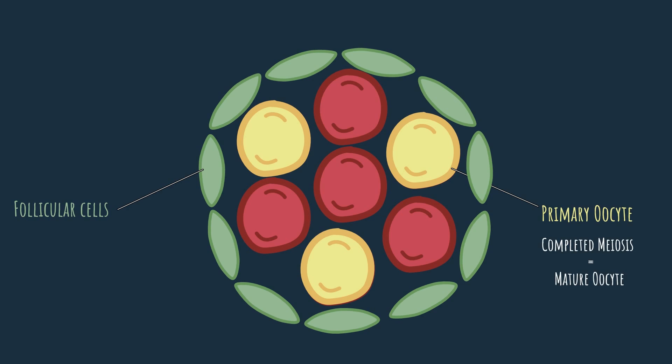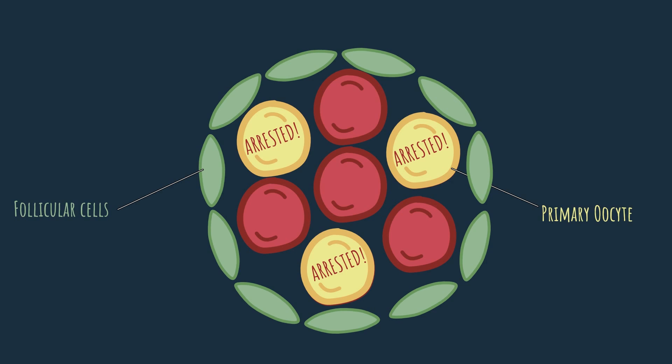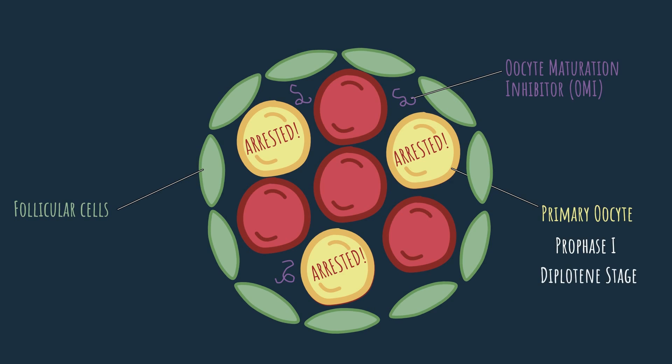However, the primary oocyte will not undergo all stages of meiosis any time soon. The primary oocyte is arrested at the very beginning of meiosis. Now let's see how it is arrested — and for that we go back to the follicular cells. Their important role is arresting the oocyte. What they do is secrete a factor very conveniently called the oocyte maturation inhibitor, or OMI. OMI inhibits the maturation of the oocyte. To be more specific, the oocyte is arrested at prophase I of meiosis I — and to be super specific, at the diplotene stage of prophase I.